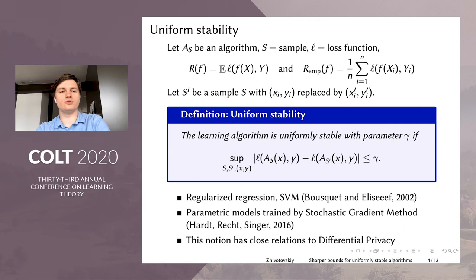We will use a closely related notion of stability, the so-called uniform stability. Let S denote our learning sample, AS be a learning algorithm, and L denote our loss function. For any predictor F, let R(F) be our true risk, where the expectation is taken with respect to any pair (X,Y). And our empirical error is defined as the sum of errors of a given predictor F with respect to the given sample S. So we also define S_i. It's a sample S where we replace (X_i, Y_i) by (X'_i, Y'_i). So any point which is different from the original point.